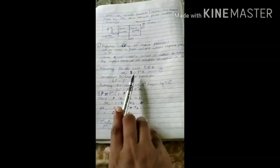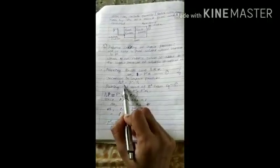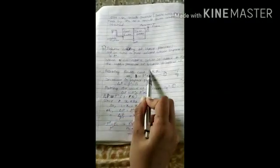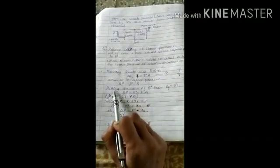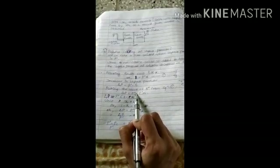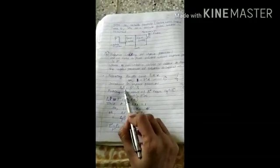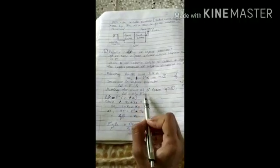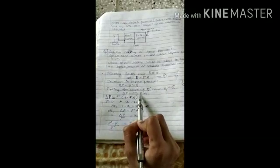Decrease in vapor pressure: if the temperature is tf0, then we write tf0 minus tf equals delta tf. Similarly, to write decrease in vapor pressure, we write delta p equals p0 minus p1. Putting the value of p1 from equation 1, delta p equals p0 minus p0 times x1.